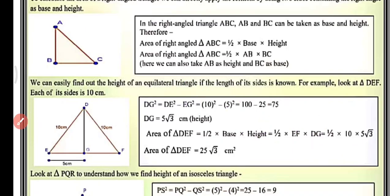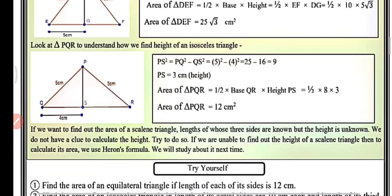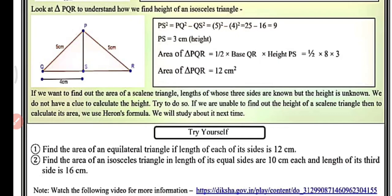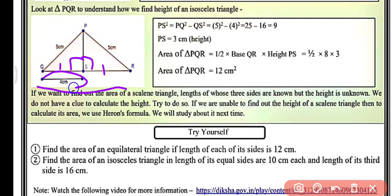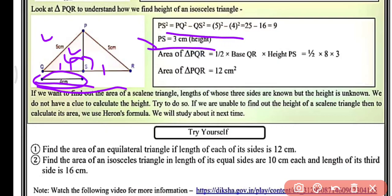Now proceed and look at triangle PQR to understand how we find the height of an isosceles triangle. Whenever we draw an altitude in an isosceles or equilateral triangle, the altitude bisects the opposite side. Here QR is 8 cm, so QS will be 4 cm. PQ is 5 cm and QS is 4 cm. By using Pythagoras theorem, we can find PS, which comes out to be 3 cm.